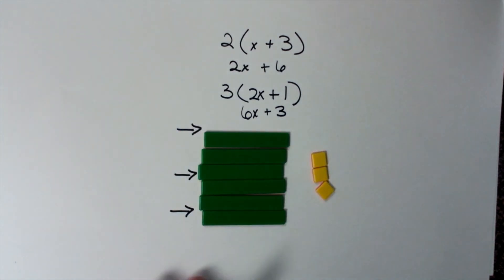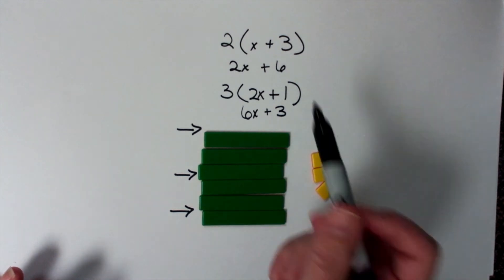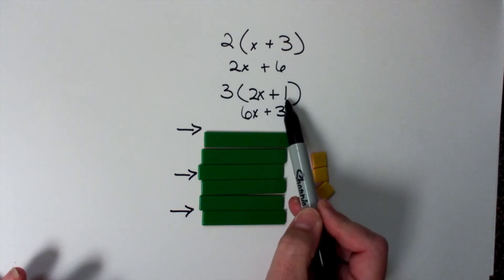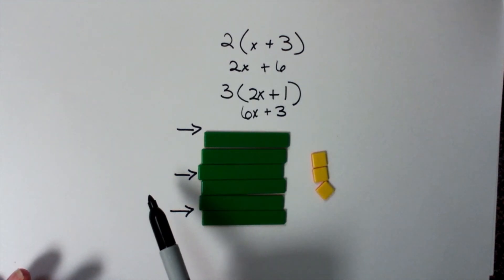They're not like terms, I can't combine them. But I've done the distributive property. And this is where you can talk about, okay, three groups of 2x is 6x, three groups of 1 is 3. And so you begin to have those discussions.